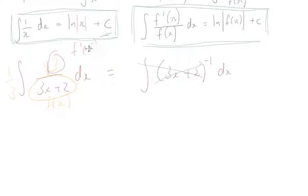And now it is of the form f'(x) on f(x), so it's going to be a log. So this is equal to a third of the log, absolute value, f, so 3x plus 2, and then plus c. And that's my question done.